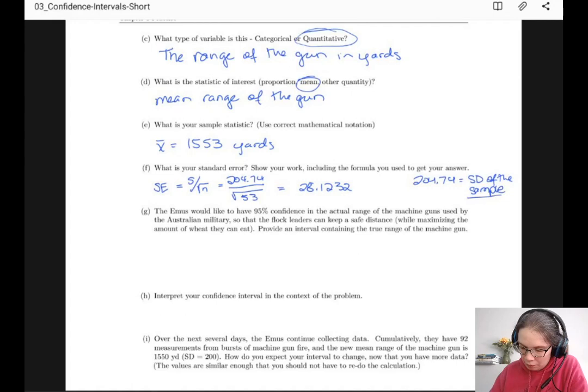Now notice that 204.74 equals the standard deviation of the sample, and this is the standard error, the standard deviation of the sample mean. So there are two different quantities, and the standard deviation of the mean should always be smaller than the standard deviation of the sample.